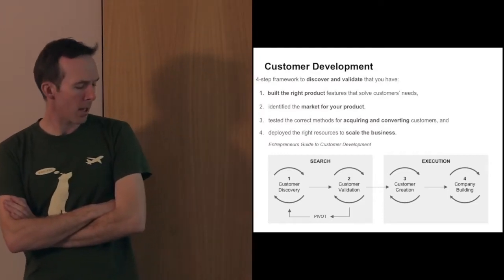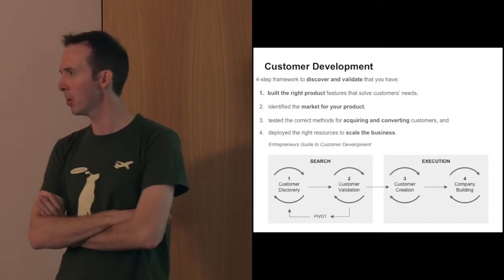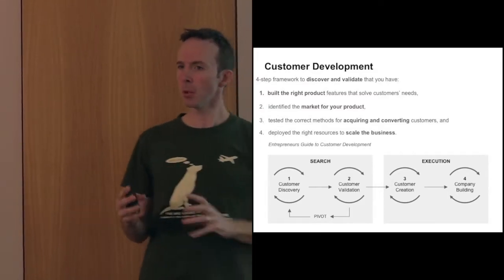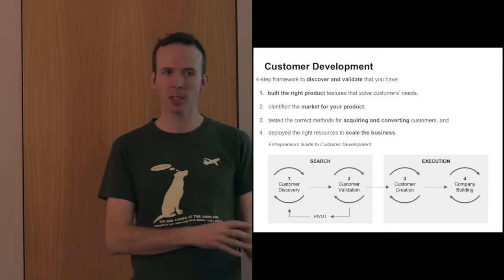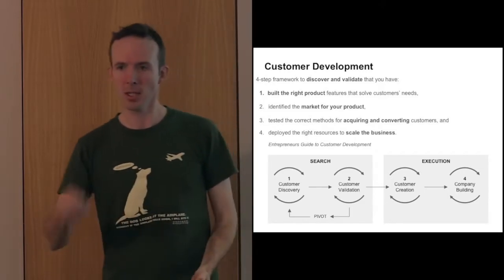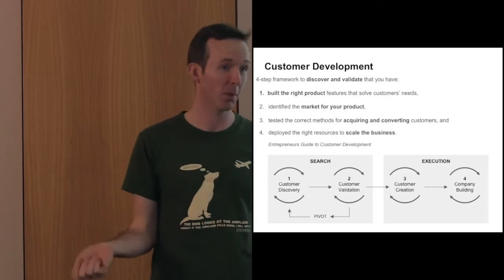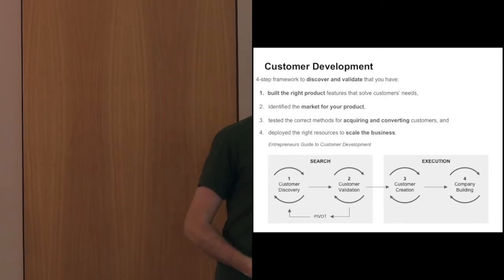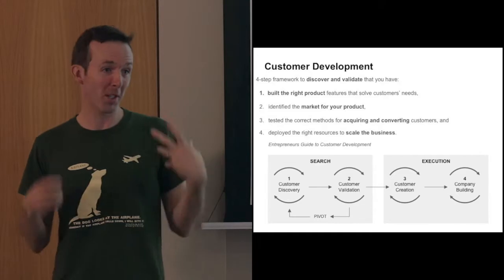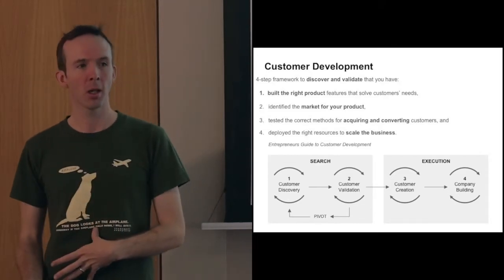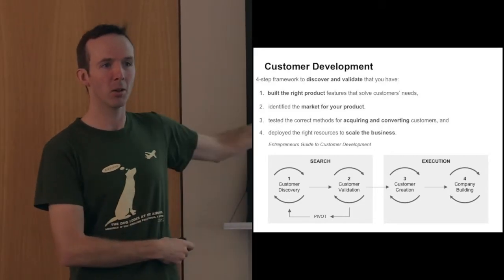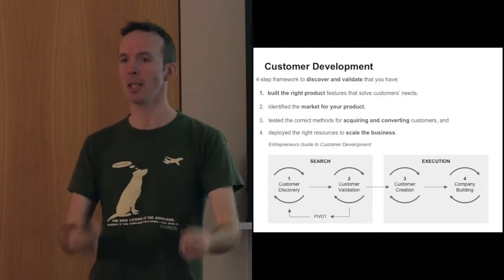Step one is really finding out that there are people who have the problem you think they have, which is customer discovery. We need to have built or designed the right product that fits the customer's needs in step one. In step two, we identify the market for our product. And to identify a market, we actually need to sell something to that market. Otherwise, we've just imagined a market. And you'll see there's this nice little arrow that comes back here after step two called the pivot. When you go out and you find that that market doesn't exist or it's different to what you thought and you need to change your product.